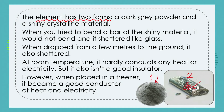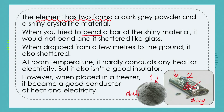Our new element has one allotrope that is dull and powdery, and another that is shiny and metallic with crystals. We continue the investigation by taking a bar of the shiny metallic allotrope and trying to bend it — testing whether it is ductile, malleable, or tensile. We find it does not bend at all, and it shatters like glass.